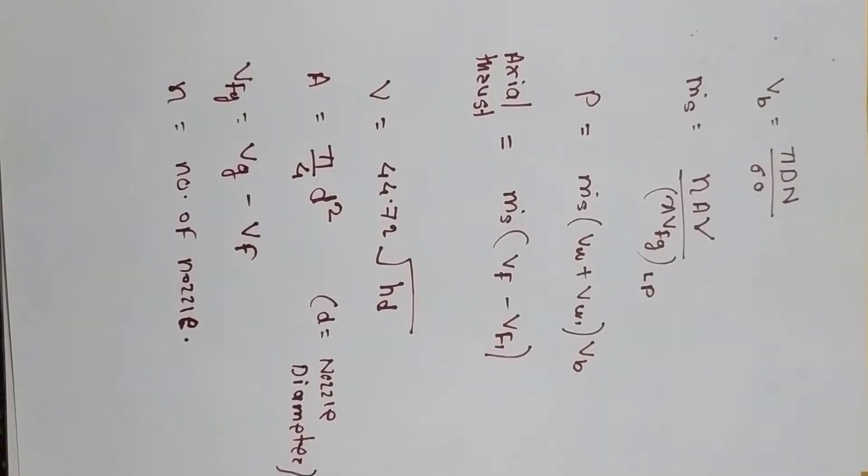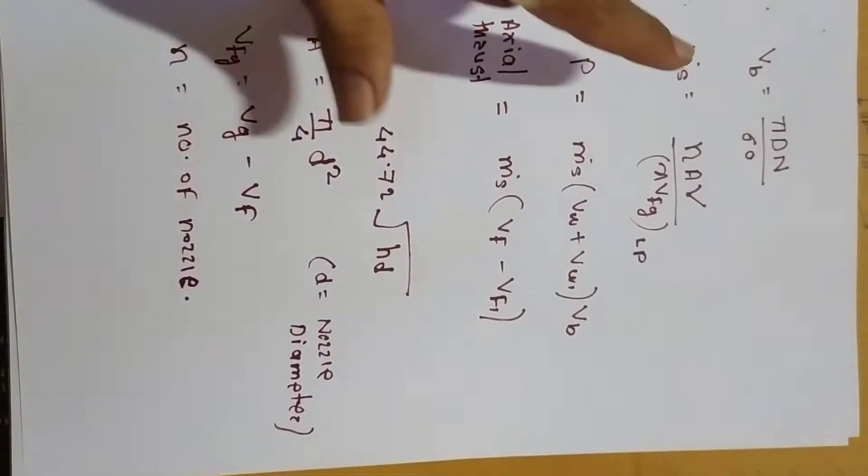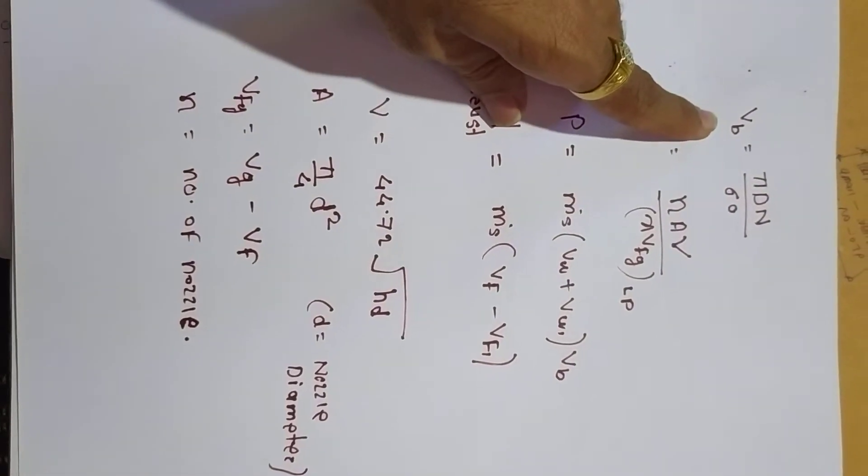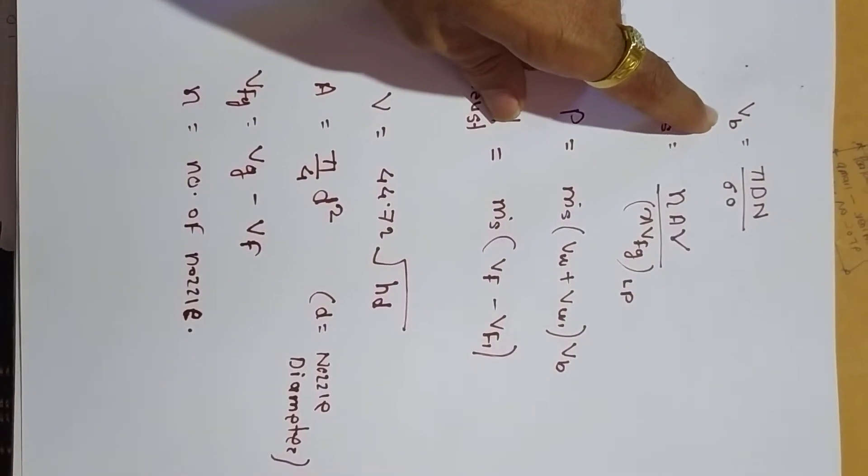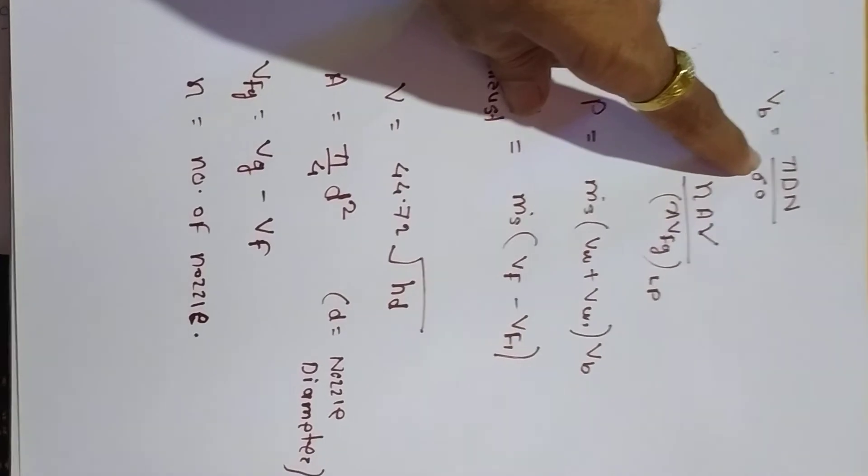A number of points will be covered in the numerical itself. See, we'll go through the formulas now. First one is VB, the blade velocity: pi D N divided by 60, where D is the drum diameter and N is the RPM.